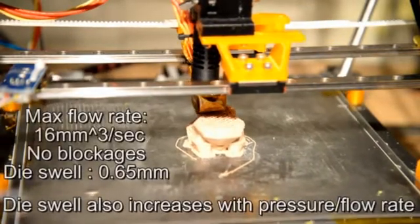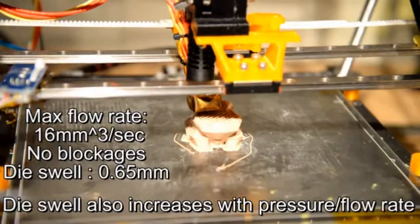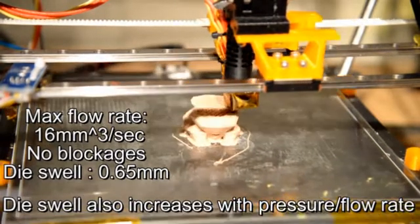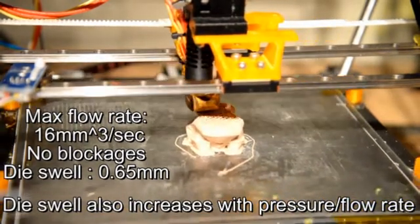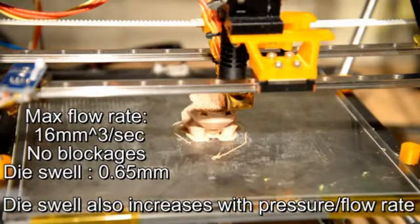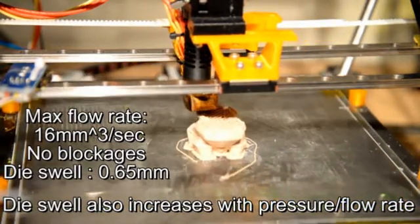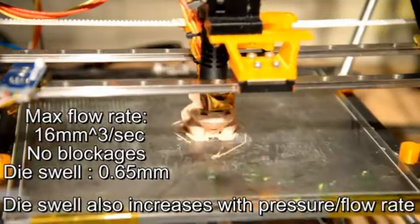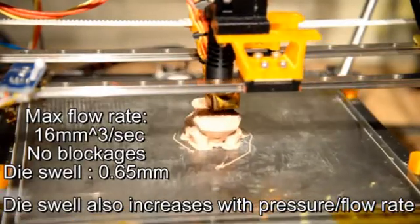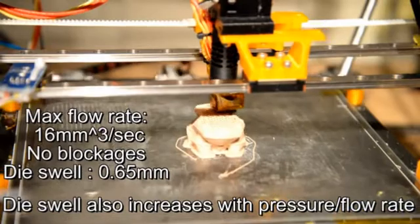What we're actually relying on mostly here is a phenomenon called die swell. So as the plastic gets heated and extruded through a small nozzle, there's a degree of spring back, and so the material that comes out of the nozzle is actually slightly thicker than the nozzle size itself.